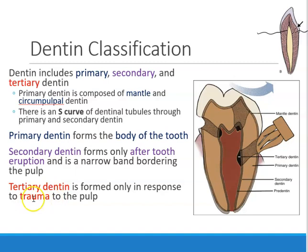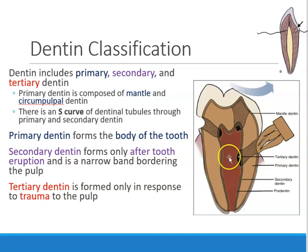The last type is tertiary dentin, and that only happens when there's trauma. For example, if a toothbrush is aggressively brushing and damaging the enamel, the moment you disrupt the tooth, the body recognizes it and deposits more dentin in that area. That deposit to protect the pulp is tertiary dentin — caused by trauma from aggressive brushing, cavities, or grinding.